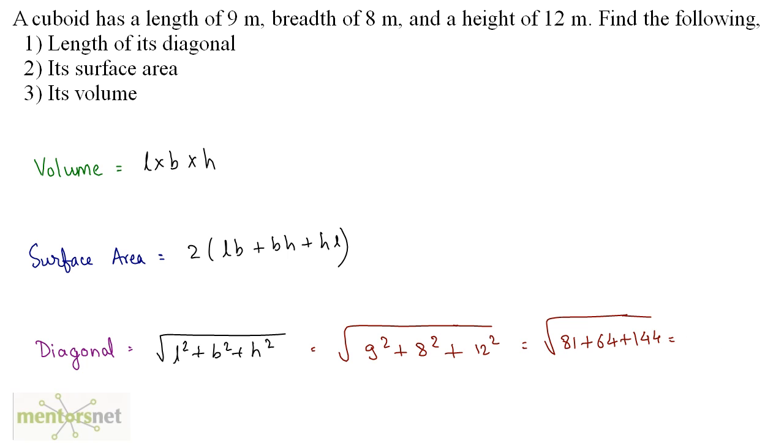So this will be under root of 289, and under root of 289 is equal to 17. So the length of the diagonal is 17 meters.